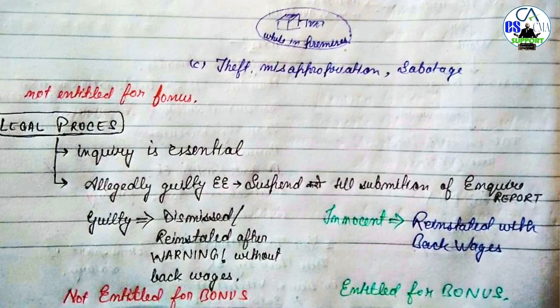उसके बाद, the allegedly guilty employee is suspended for the period of the inquiry till submission of the inquiry report। Inquiry का जो दौर होगा उस दौरान उसको suspend कर दिया जाता है employee को - और कब तक के लिए? Till submission of the inquiry report।